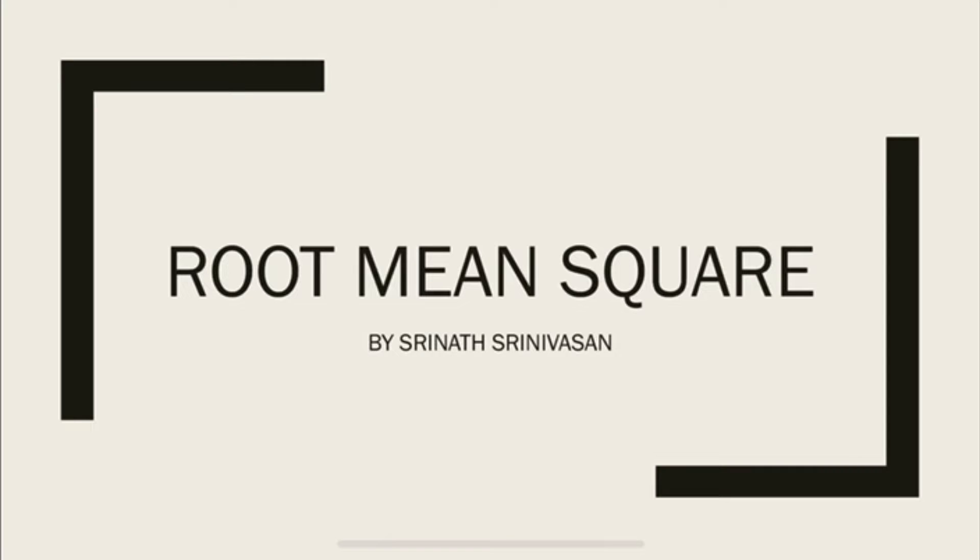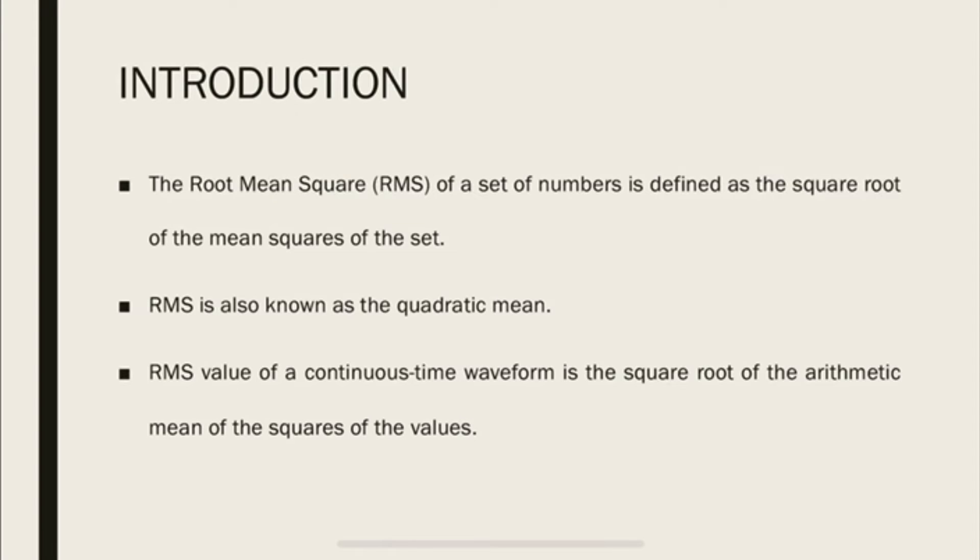Hello everybody. Today we'll talk about root mean square. So the root mean square or RMS of a set of numbers is defined as the square root of the mean squares of the set. RMS is also referred to as a quadratic mean. RMS value of a continuous waveform is the square root of the arithmetic mean of the squares of the values. Let's look at the equation so it becomes more clear.